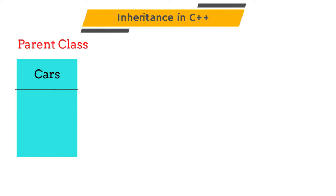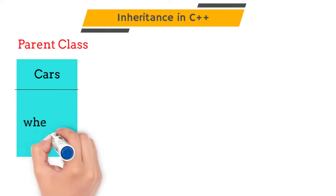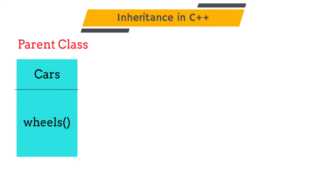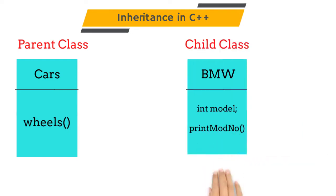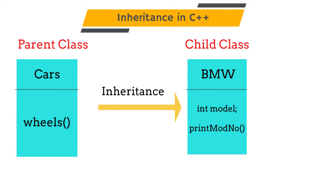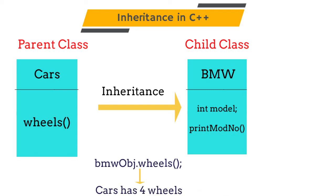This same concept is used in C++ and other object-oriented programming languages. For example, consider a class Cars. We have defined a wheels method in our class which will print 'Car has 4 wheels.' If we are creating a child class called BMW which inherits the Cars class, then we don't need to rewrite the wheels method. We can directly reuse that method. Consider an object of the BMW class — if we call the wheels method using the BMW object, it will print 'Car has 4 wheels.' Inheritance allows us to reuse our code.